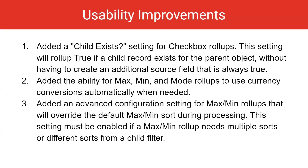We also have a lot of usability improvements. We've added a child exist setting for checkbox rollups. This setting will roll up true if a child record exists for the parent object, without having to create an additional source field that is always true. Max, min, and mode rollups will use currency conversions automatically when needed. There's now an advanced configuration setting for max min rollups that will override the default max min sort during processing.